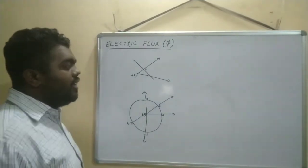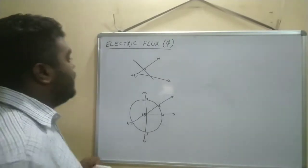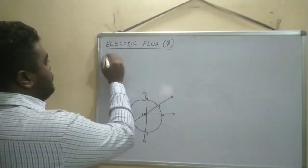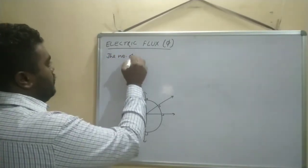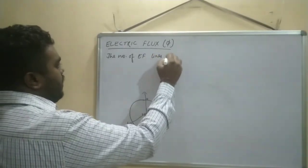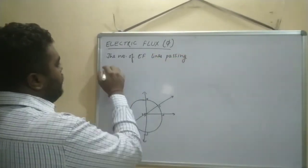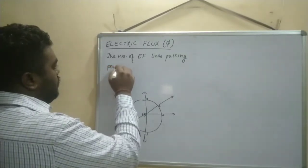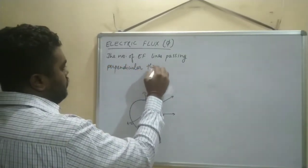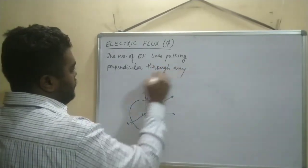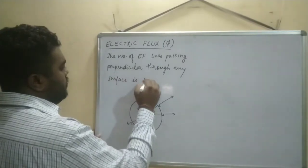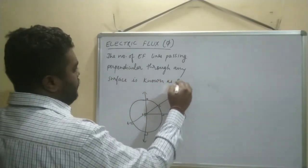So you will write the definition: the number of electric field lines passing perpendicular through any surface is known as electric flux.